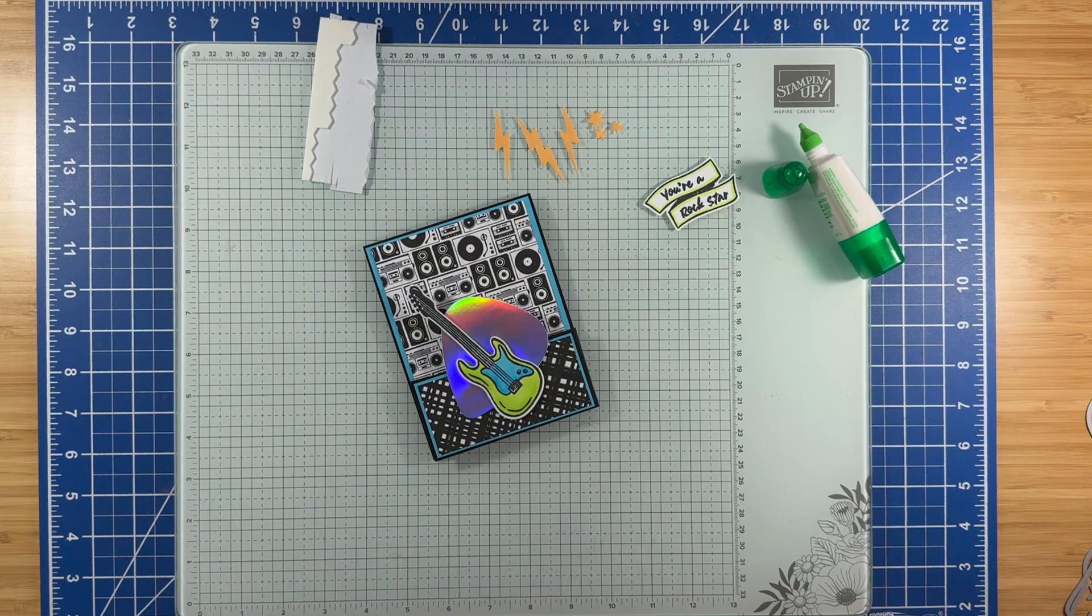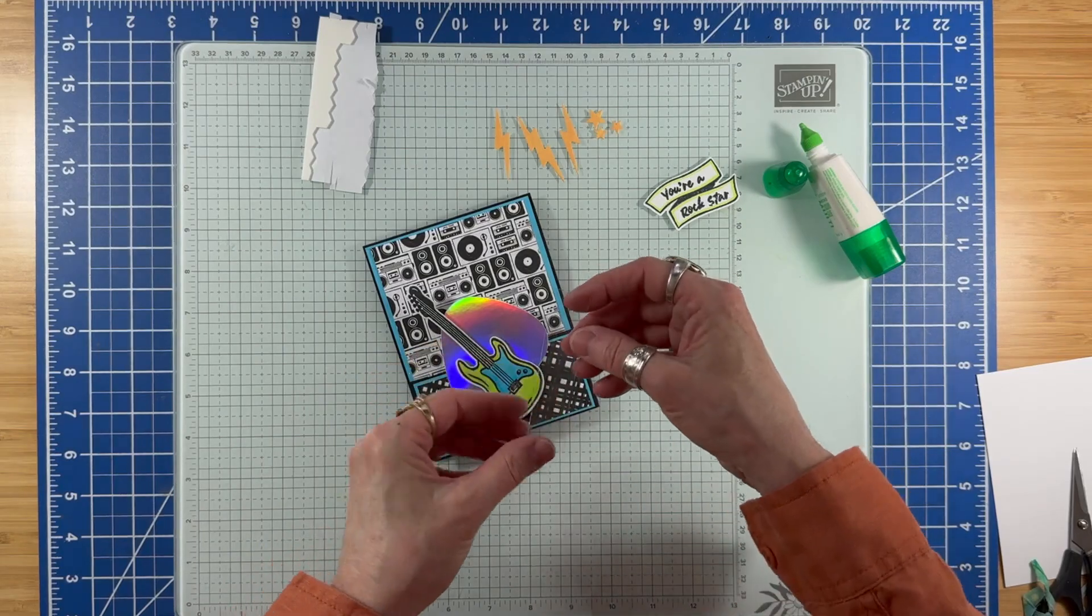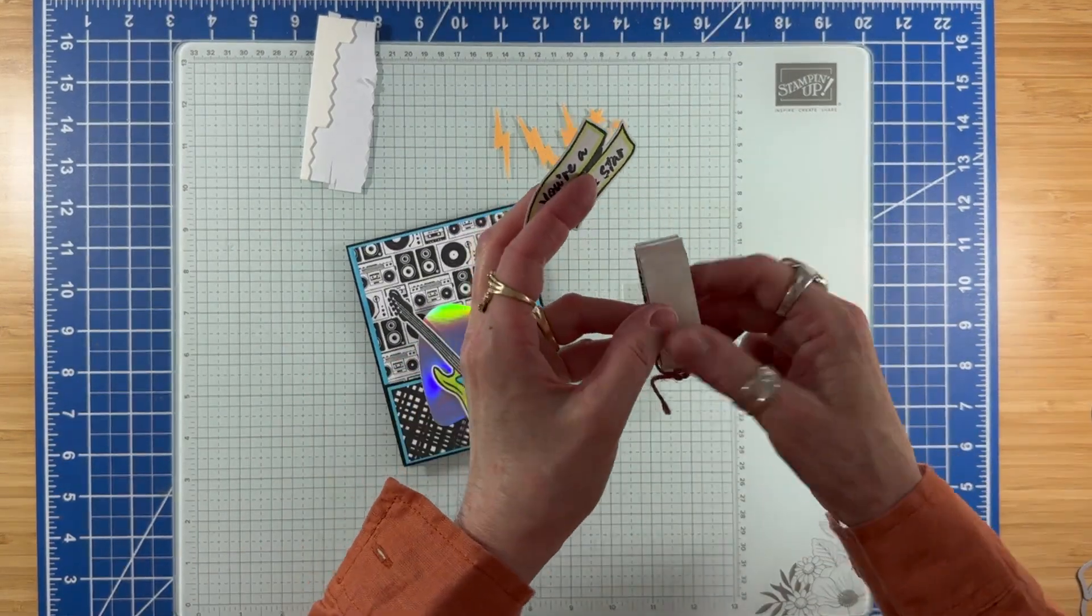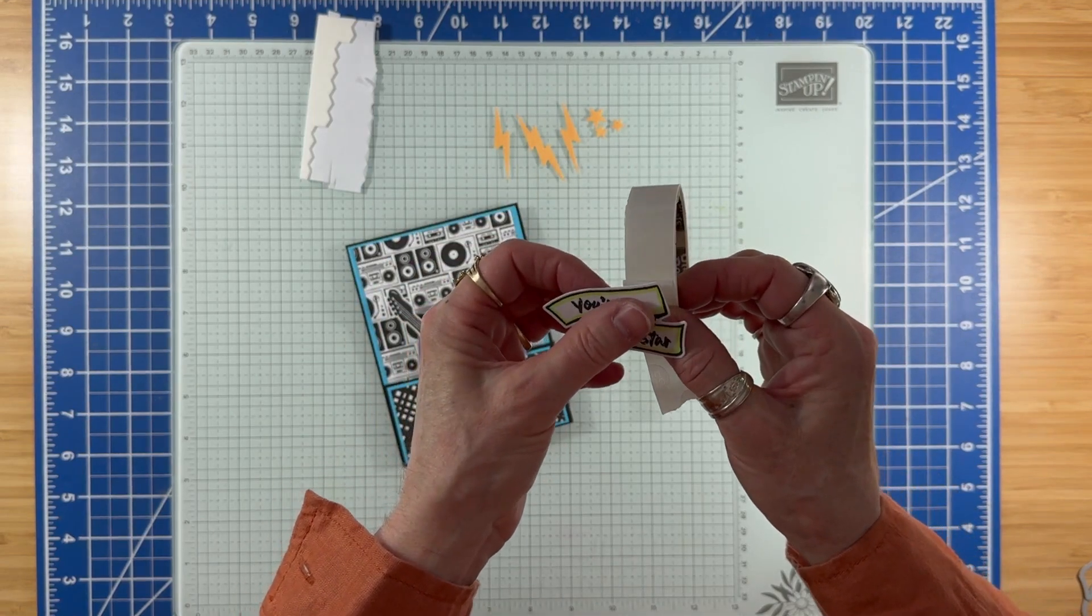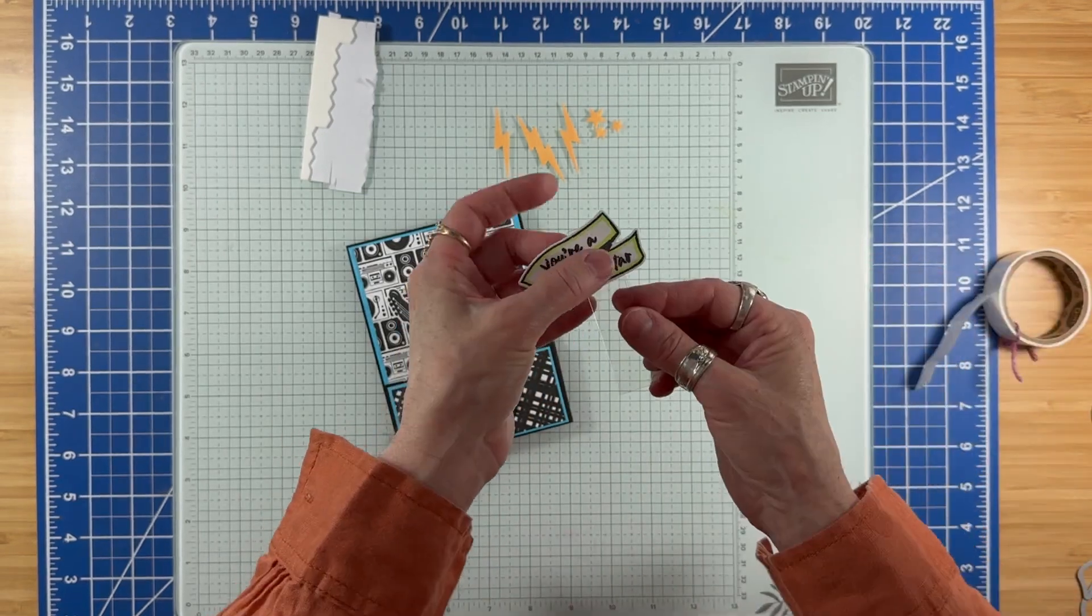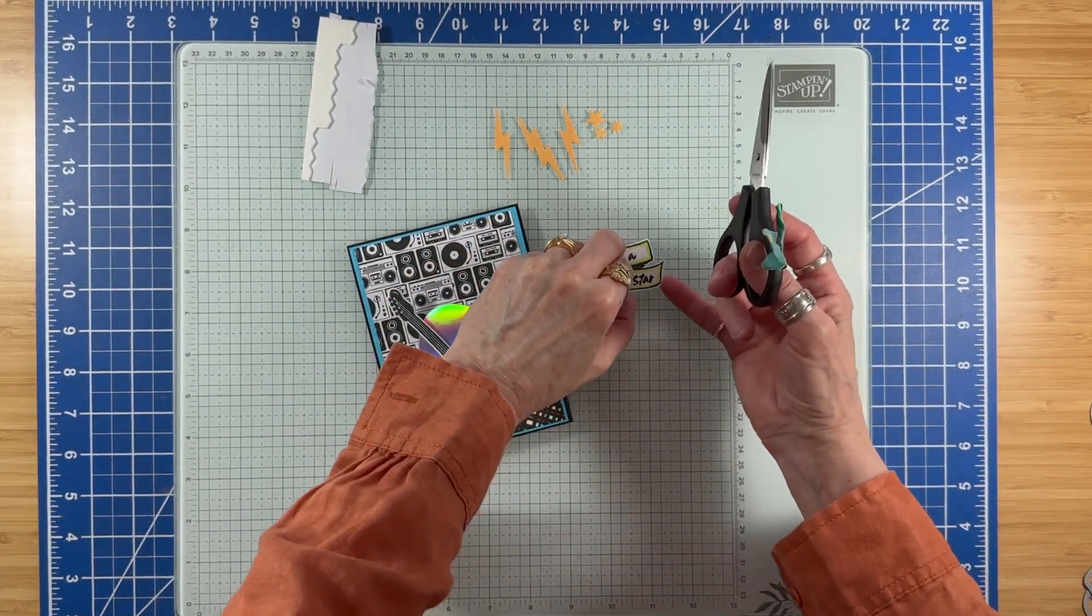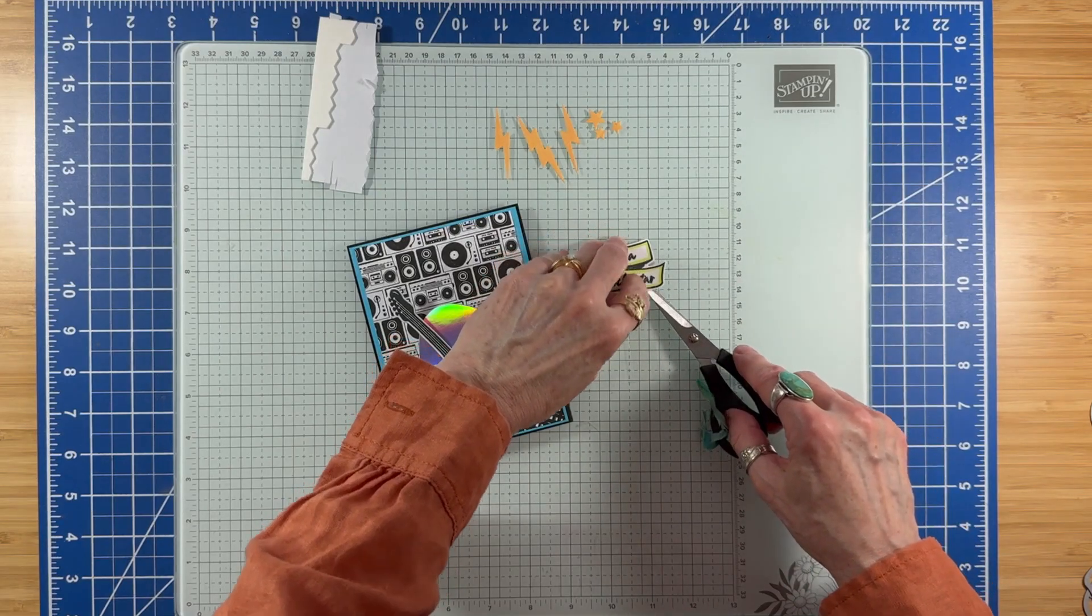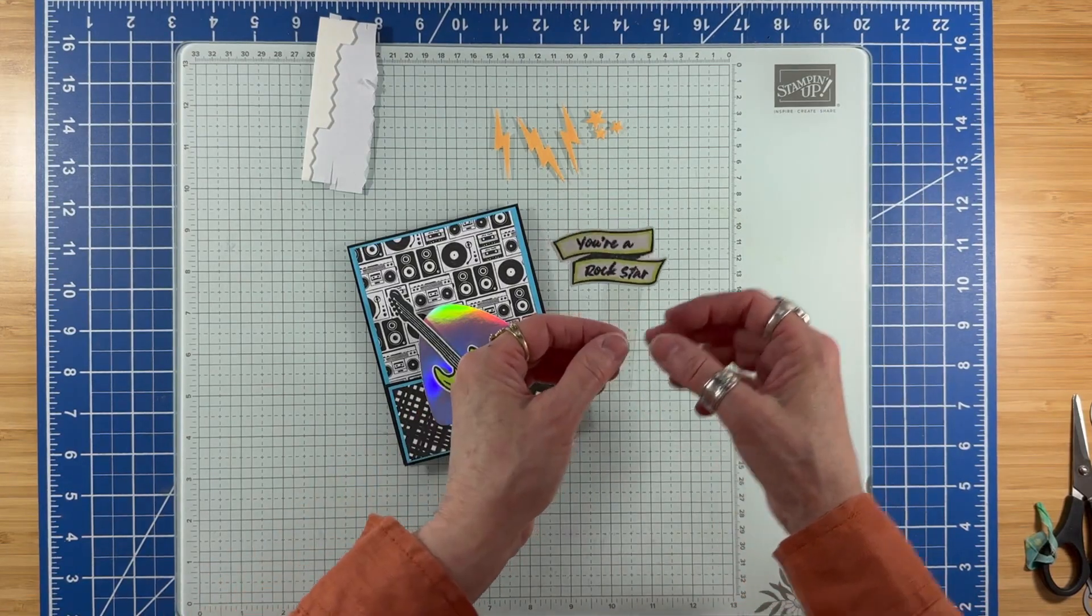For the Rockstar sentiment, I have a piece of window sheet that measures 3.5 inches by 0.75 inches. I'm putting a glue dot on the back of the sentiment near the top and gluing that. Then I'm going to lift this up and put a second glue dot underneath there. So now I have my sentiment on here.